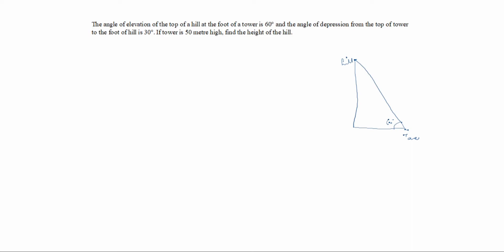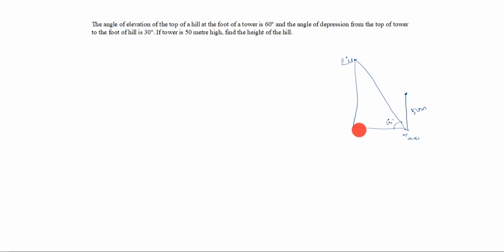This is the foot of the tower, and here is the top of the tower. We will draw a line from the top of the tower. The tower is 50 meters high — this is the foot of the tower, foot means down, and the top of the tower is given as 50 meters, so we write 50 meters here. Angle of depression means we stand at the top and look down.